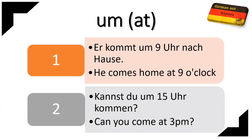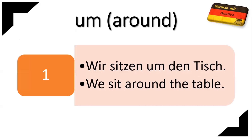The next preposition is U, which is um. Um means 'at' for exact timing. For example: 'Er kommt um neun Uhr nach Hause' — He comes home at nine o'clock. You can also say: 'Kannst du um drei Uhr kommen?' — Can you come at 3 pm? Um also has another meaning: 'around.' For example: 'Wir sitzen um den Tisch' — We sit around the table. In this case, um means 'around,' not 'at.'